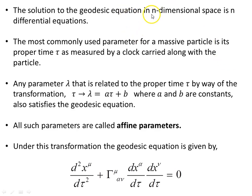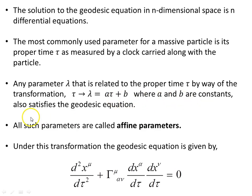The solution to the geodesic equation in n-dimensional space is n differential equations. The most commonly used parameter for massive particles is the proper time τ, as measured by a clock carried along with the particle. Any parameter λ related to the proper time τ by τ = aλ + b, where a and b are constants, also satisfies the geodesic equation. These parameters are called affine parameters, and under this transformation the geodesic equation retains the same form.